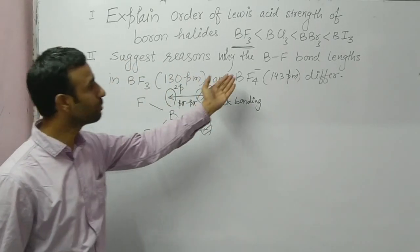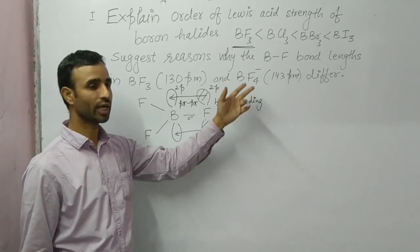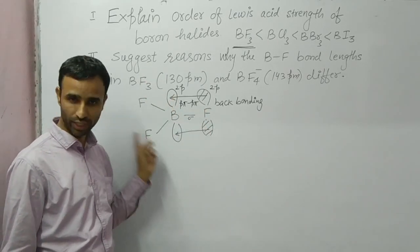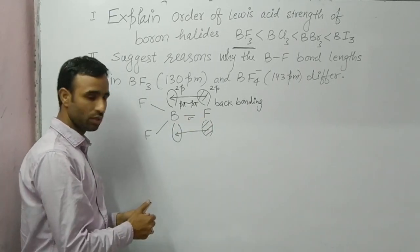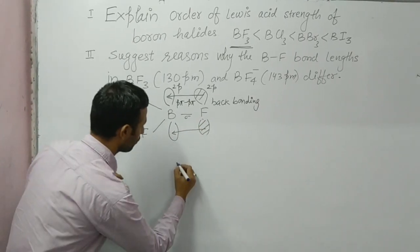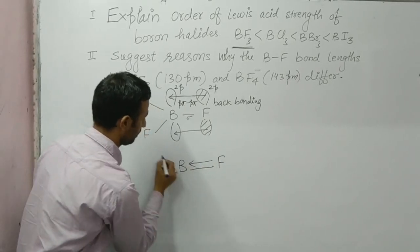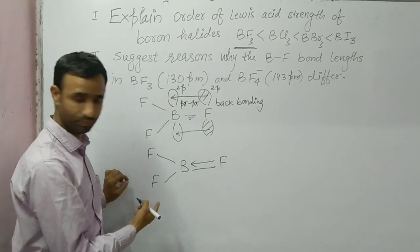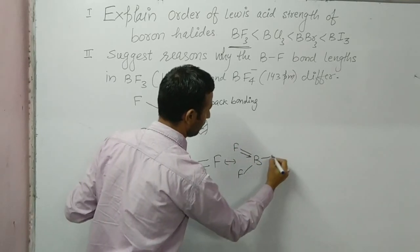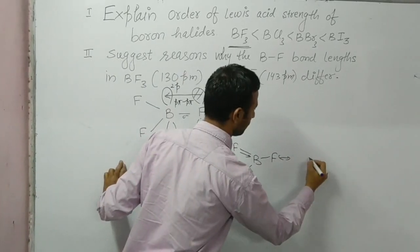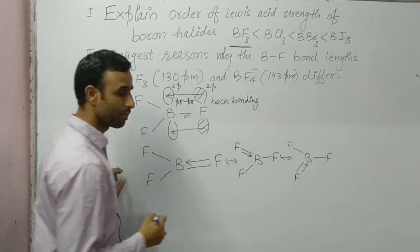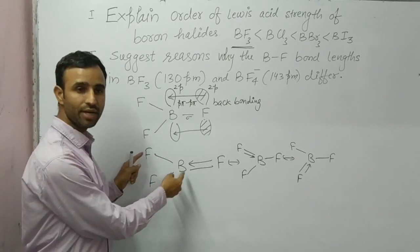For the second question — why BF bond lengths in BF3 and BF4⁻ differ: as explained, there is p-pi p-pi backbonding in BF3. This backbonding can take place through any one of the three B–F bonds, so we can draw resonance structures showing double bond character between B and F in each case.